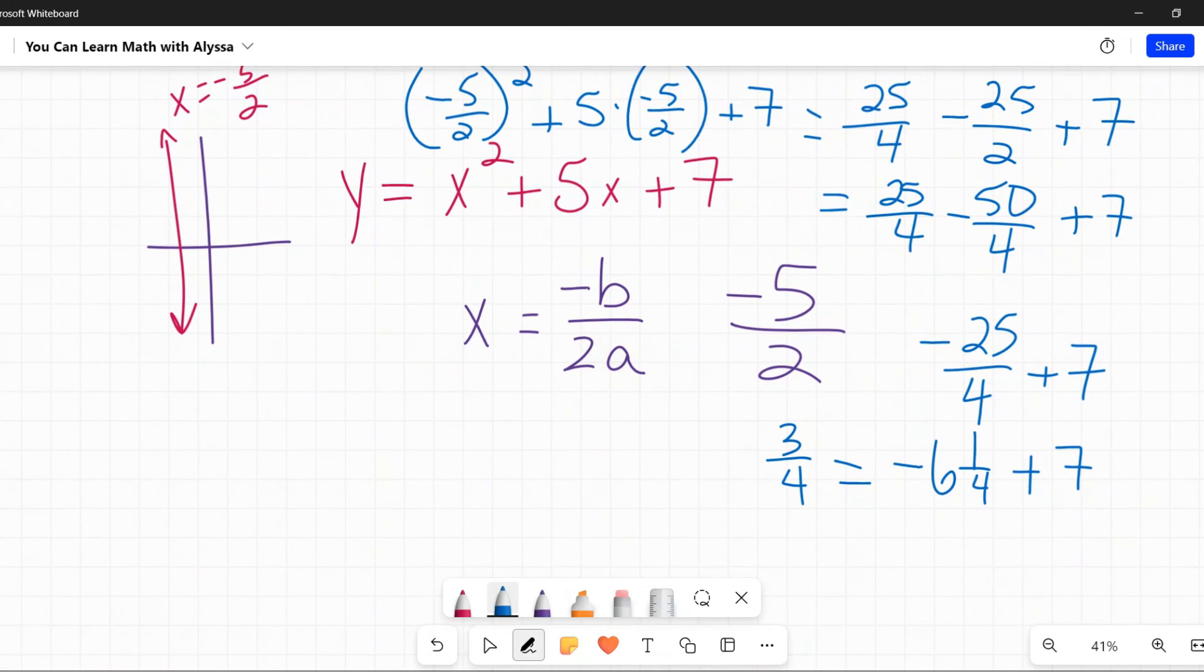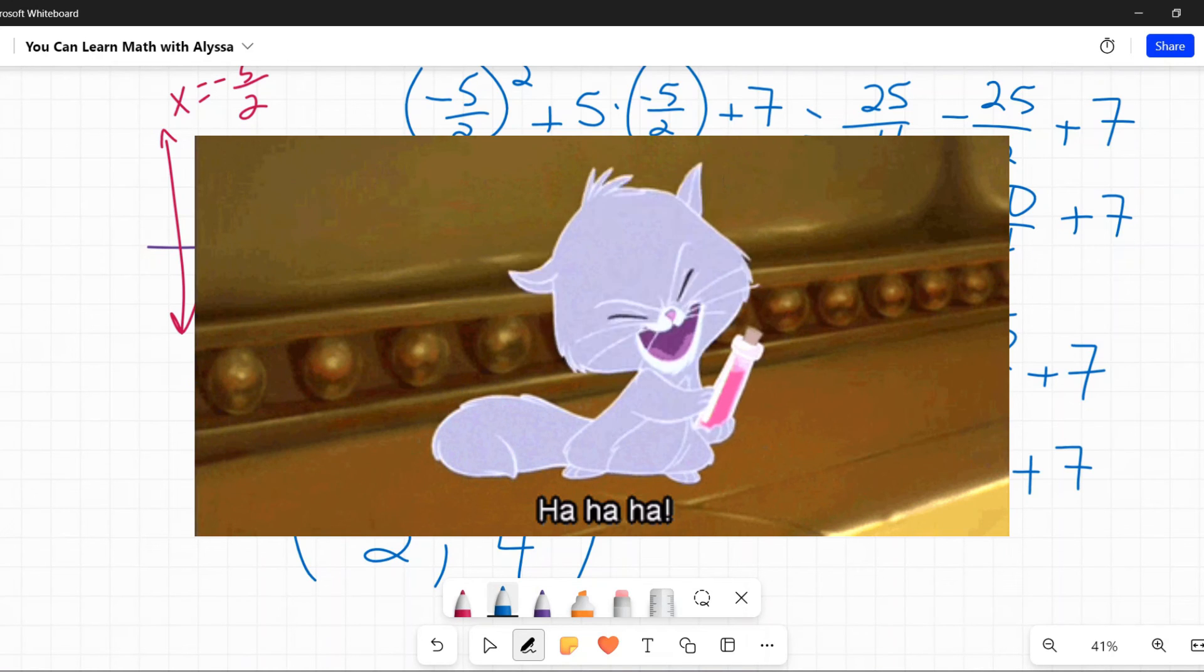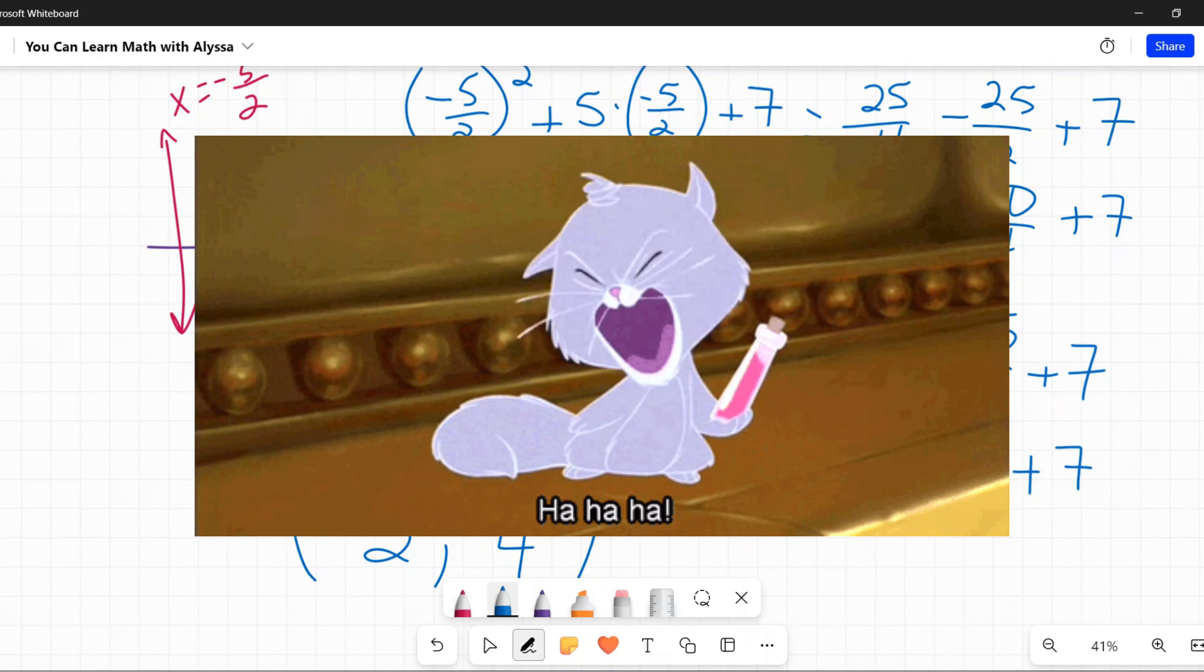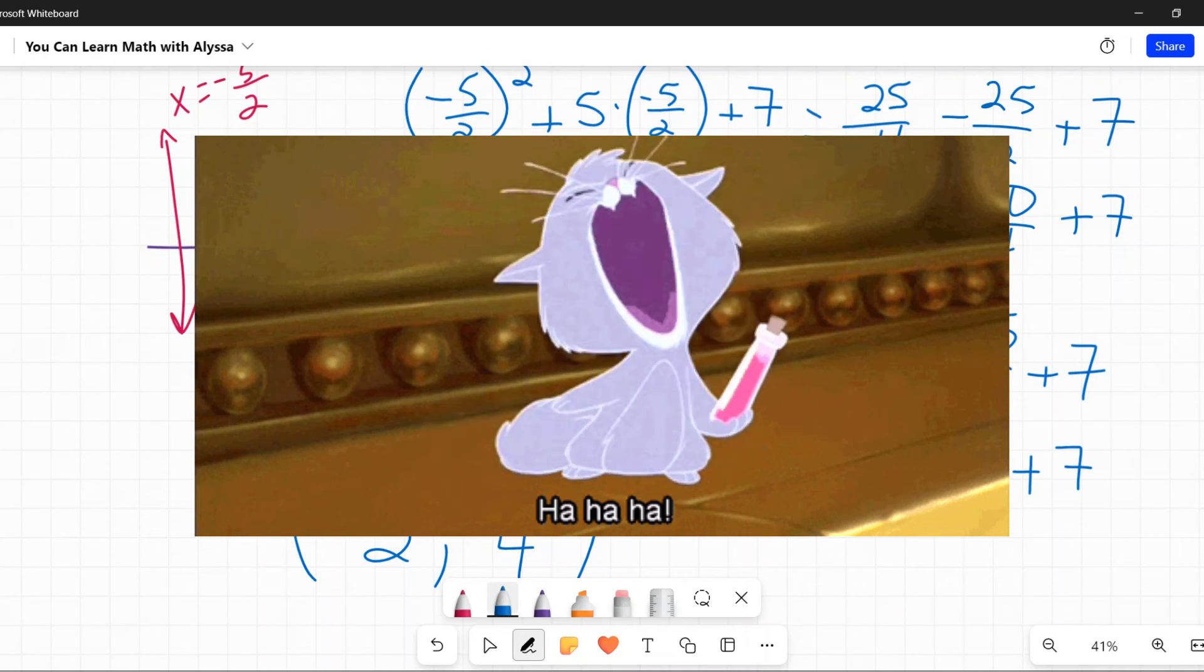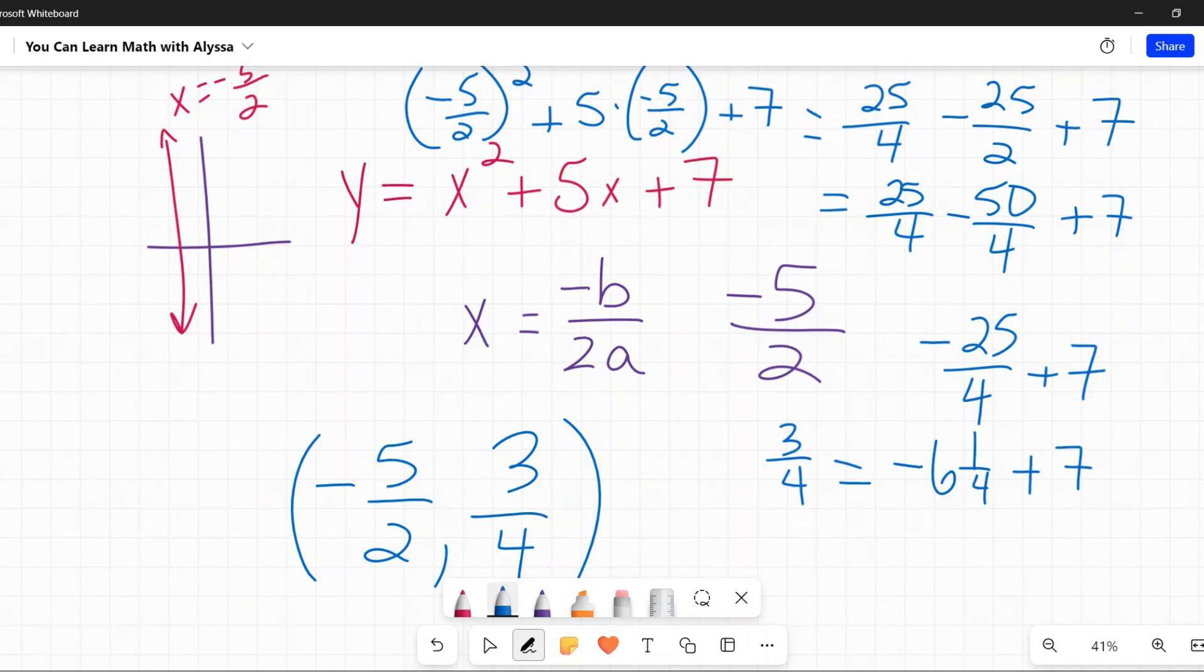So the coordinates of that vertex, my X was negative 5 halves and my Y value was 3 fourths. Granted, most of the time when they give you these, the ones you start out with are not going to be fractions, but they're going to throw fractions in there. You know they are. Deep down, they're just cackling evilly in their little math book writing layer going, they have to do fractions again.